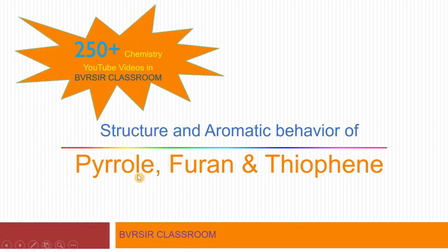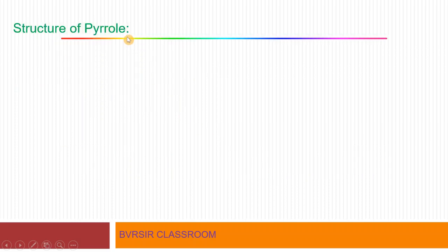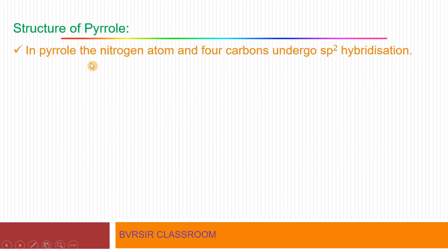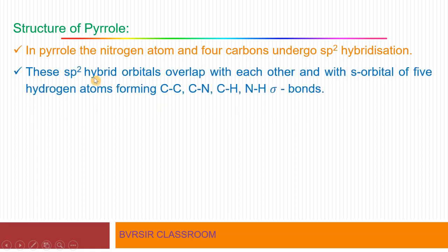We will take up one by one. First, let us look at the structure of pyrrole. In pyrrole, the nitrogen atom and four carbon atoms are involved in sp2 hybridization. It is important to remember that the hybridization involved by the nitrogen atom and the four carbon atoms in the pyrrole molecule is sp2 hybridization.